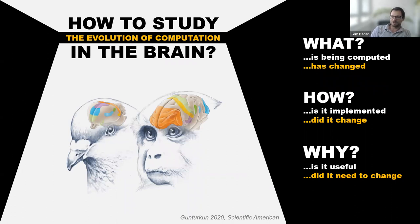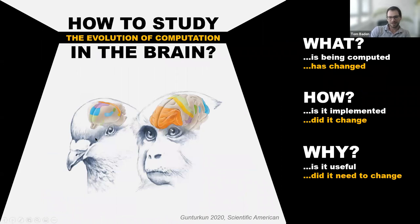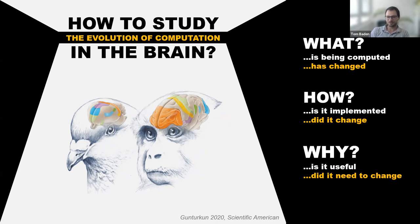If you wanted to study the evolution of computation, how would you go about this? Here we've got a picture of a bird and a monkey, and of course the nervous systems that support these animal behaviors are extremely different. You can find commonalities, highlighted here in common coloration, but they're not even in the same part of the brain. These brains have diverged so far that it's extremely difficult to go down to individual circuits and say this circuit in the primate is homologous to this circuit in a bird.